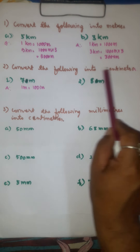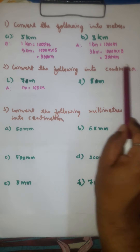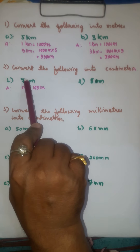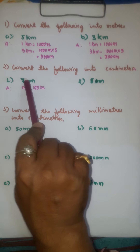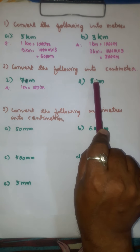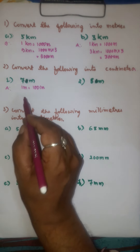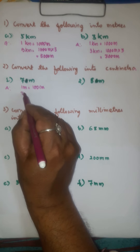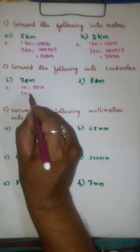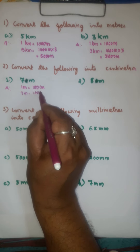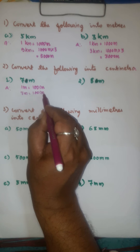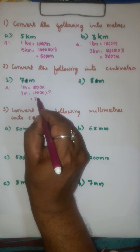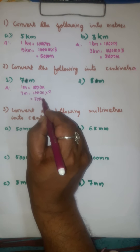In the second section, we have to convert meters into centimeters. Here we have 7 meters. We know that 1 meter is equal to 100 centimeters. Therefore, 7 meters is equal to 100 centimeters into 7. That is equal to 700 centimeters.